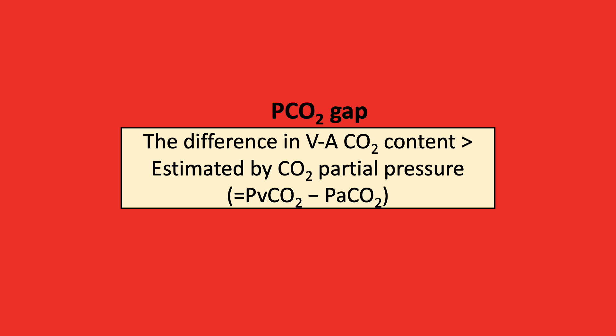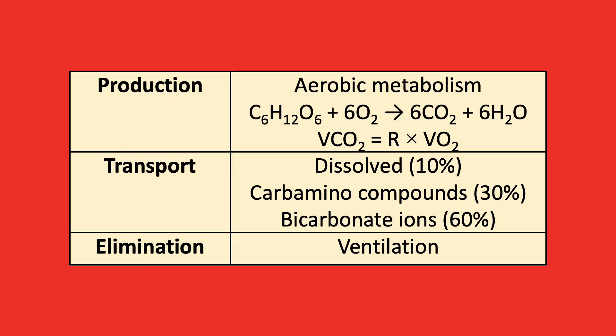The content of carbon dioxide is difficult to measure as it exists in multiple forms, and therefore we can estimate the gap by assessing the partial pressure of venous and arterial carbon dioxide levels. For completeness, mixed venous samples should be assessed via a pulmonary artery catheter; however, this can be technically difficult and therefore is commonly taken via a central venous line.